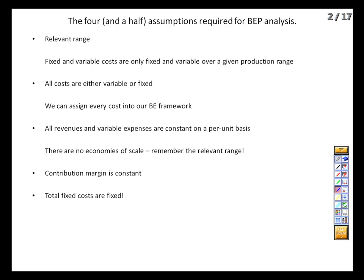The half assumption flows directly from this one: the contribution margin is constant. If the variable cost of our product is $2 and we get $3 to sell one unit, that $1 difference will be the same for the first, the hundredth, and the thousandth unit sold. Lastly, total fixed costs are fixed. If our goal is to break even, we need to sell enough product to cover those fixed costs — like rent — and we can't have our target moving on us. If we say our target is x, it needs to stay at x for the purpose of our calculations.